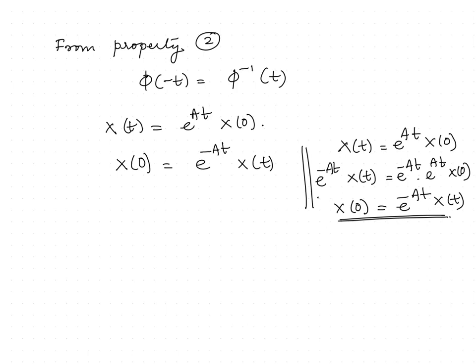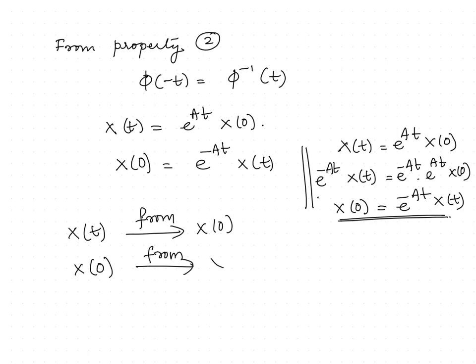So the state transition matrix can be used one way to find x(t) from x(0), and it can also be used to find x(0) from x(t). This can be treated as an extension of the property of the state transition matrix. Thank you.